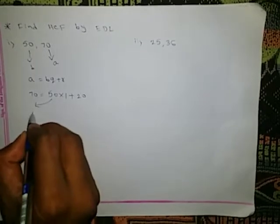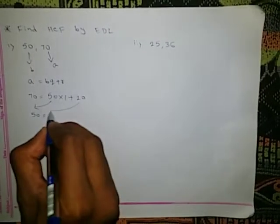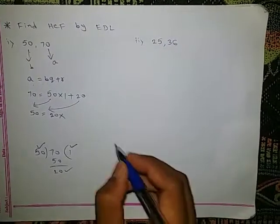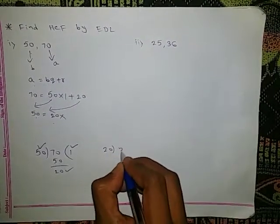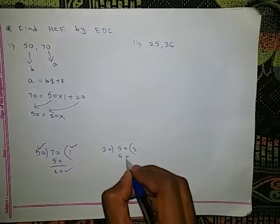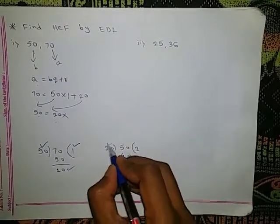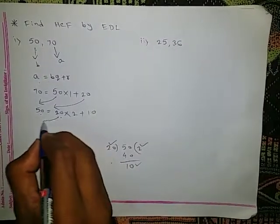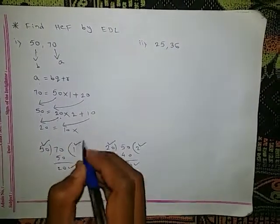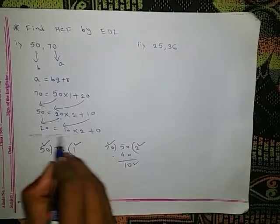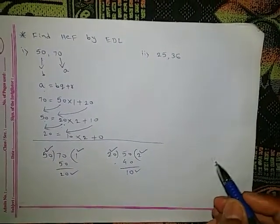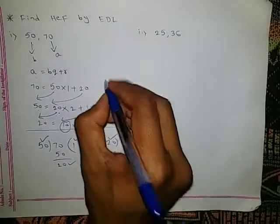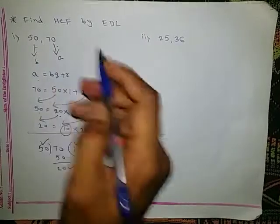Next, bring 50 here: 50 = 20 × quotient. Dividing 50 by 20: 20 twos are 40, remainder is 10. So 50 = 20 × 2 + 10. Then bring 20 here: 20 = 10 × 2 + 0 remainder. Whenever we get remainder 0, we stop the process and the divisor becomes the HCF. So HCF of 50 and 70 is 10.